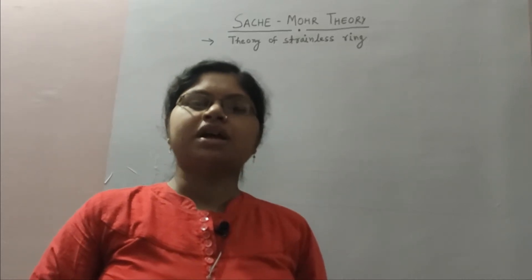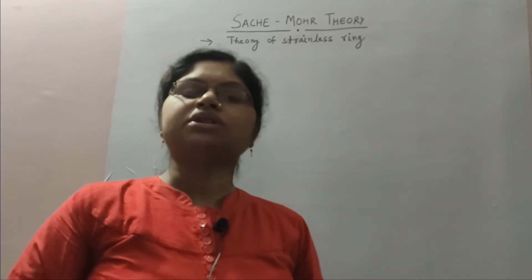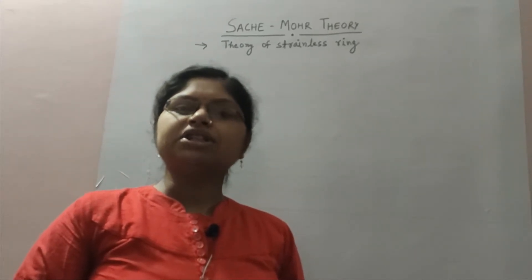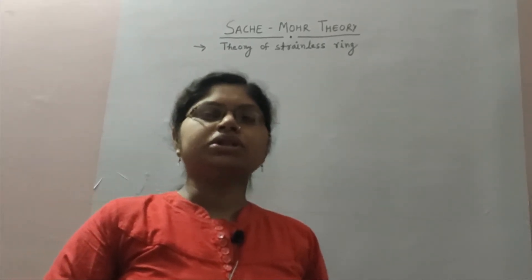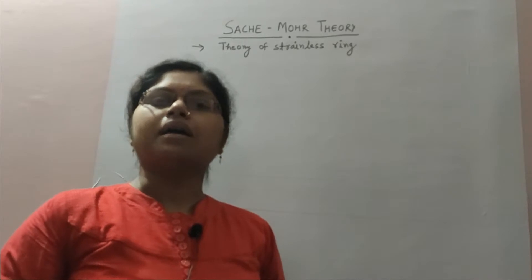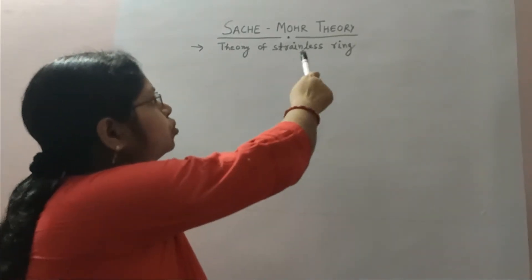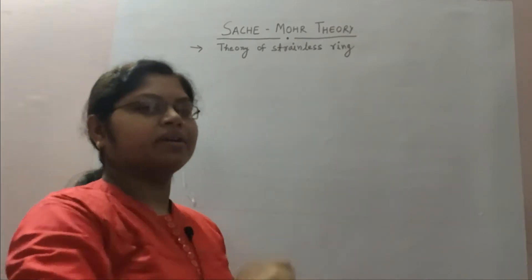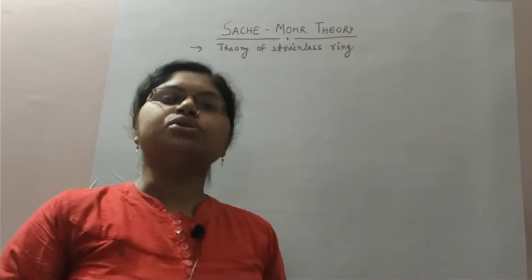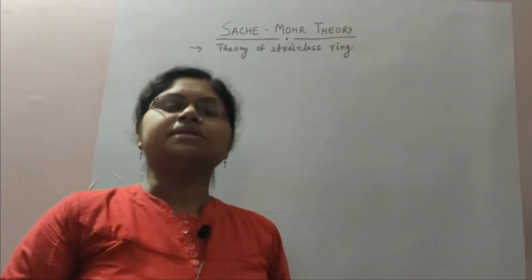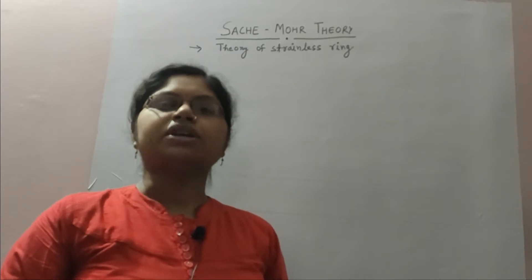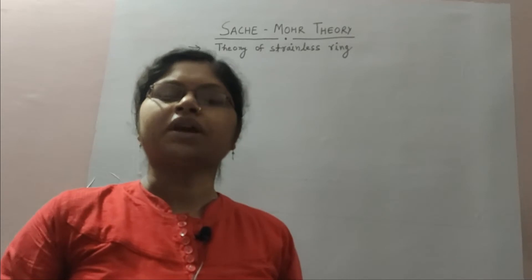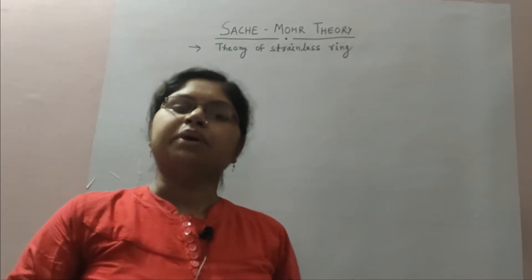Welcome back to the series of lectures on cycloalkanes. This is the third lecture on cycloalkanes, in which we will discuss Sachse-Mohr theory, also known as the theory of stainless rings. This theory is related to the stability and reactivity of cycloalkanes. For stability and reactivity, we have already discussed Baeyer strain theory and Coulson-Moffitt modification.